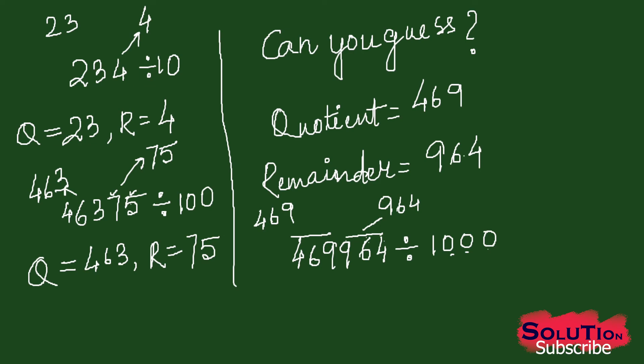So this is the easiest way to find the remainder and quotient of any problem. If I am dividing by 10, 100, or 1000, it becomes very easy to find the quotient and remainder. Hope the video is clear to you. Please subscribe to the channel and share the video with all the students who are learning division. Thank you very much.